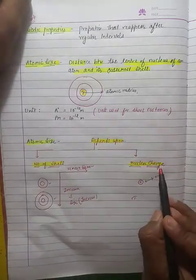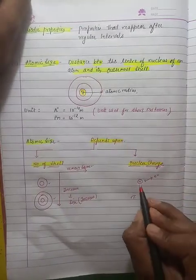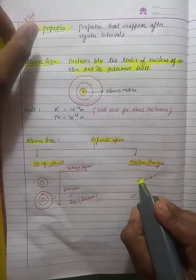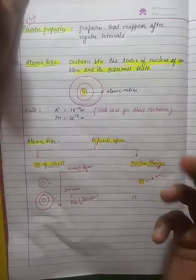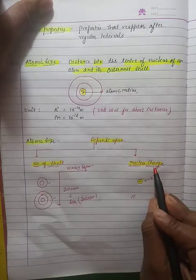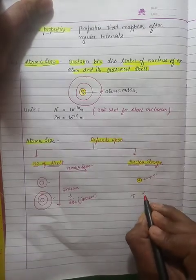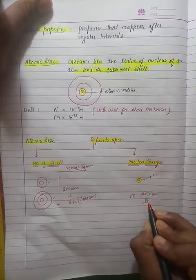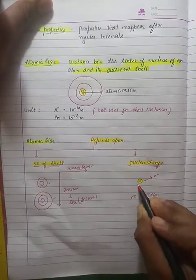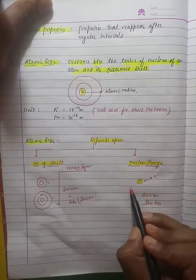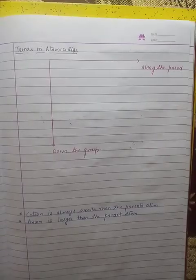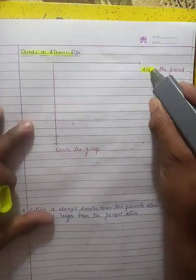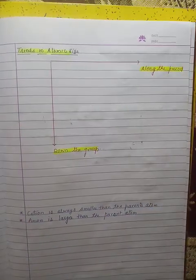Now for nuclear charge — the number of protons present in the nucleus collectively is known as the nuclear charge. Nuclear charge always tries to decrease the size, because the positive charge will attract the outermost electrons towards the nucleus, causing the size to decrease. Now let's discuss the trends of atomic size in the periodic table.